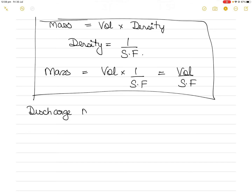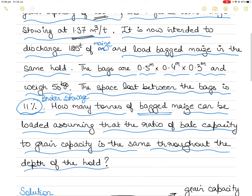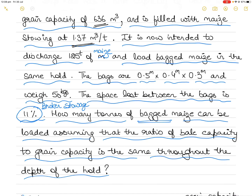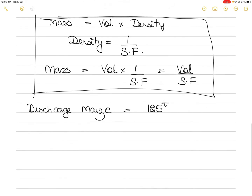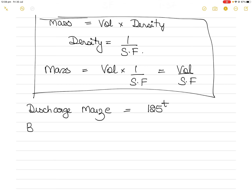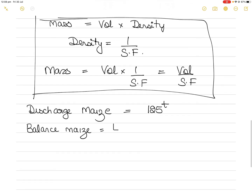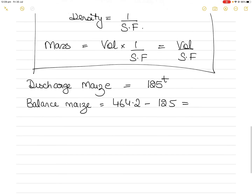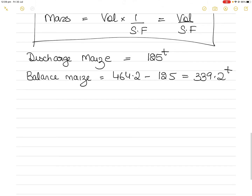You have to discharge 125 tons of maize, so the balance maize remaining is 464.2 minus 125 tons, which equals 339.2 tons. That is the loose maize remaining in the hold.